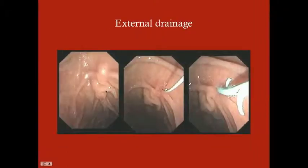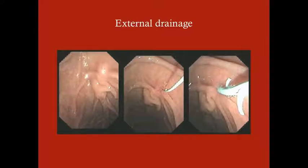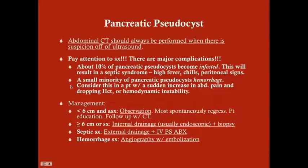The internal drainage procedure is performed endoscopically using an upper endoscope. The surgeon creates a hole connecting the stomach and the pseudocyst, decompressing the cyst. Depending on the cyst's location on CT, drainage may be into the stomach or the duodenum. The key clinical distinction is: internal drainage for non-infected pseudocysts, external drainage for infected ones.